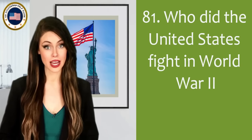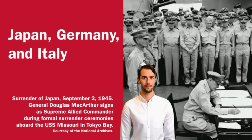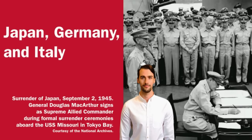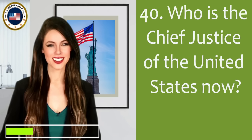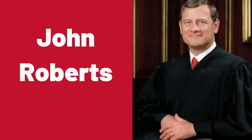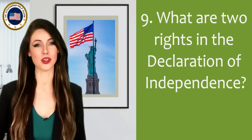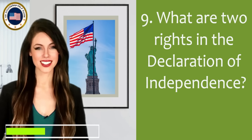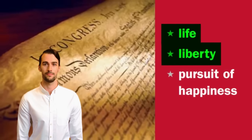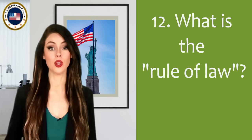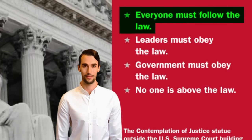Who did the United States fight in World War II? Japan, Germany, and Italy. Who is the Chief Justice of the United States now? John Roberts. What are two rights in the Declaration of Independence? Life, liberty. What is the rule of law? Everyone must follow the law.